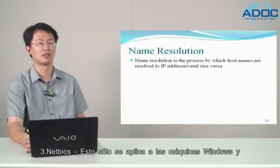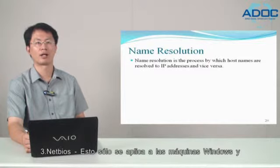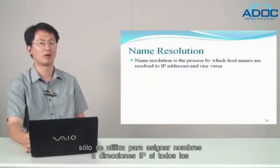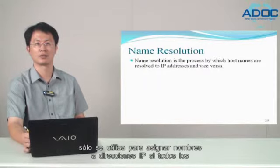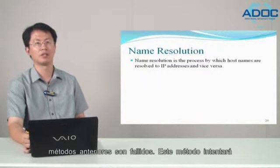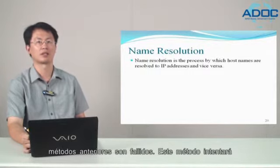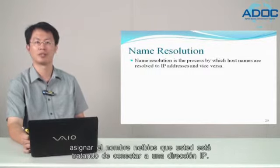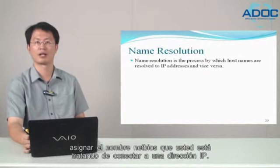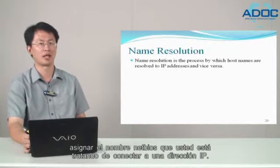Third, NetBIOS. This only applies to Windows machines and will only be used to map names to IP addresses if previous methods failed. This method will attempt to map the NetBIOS name you are trying to connect to with an IP address.